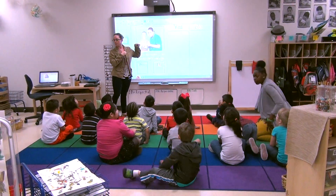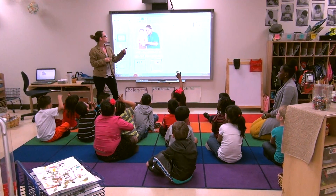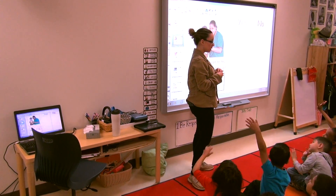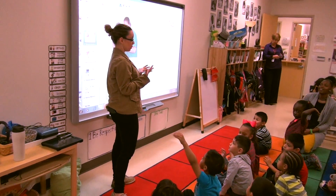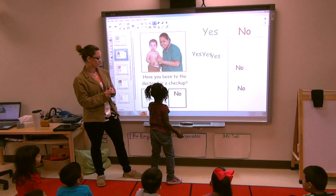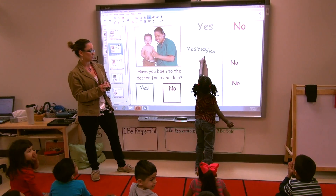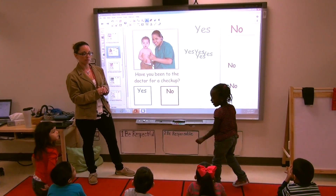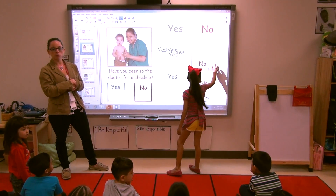We try to use the smart board technology a lot to get the kids interacting with our morning messages or daily questions, asking them questions where they can come up and use it to show their answer — yes, they've done something, or no they haven't. We also use it during transitions where the kids will have different music and movement videos where they can follow along and follow directions.